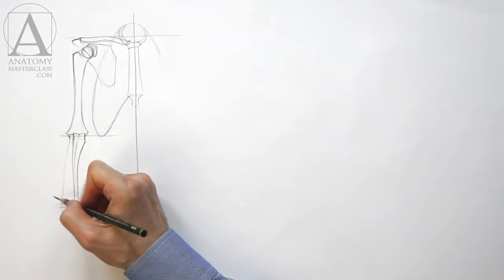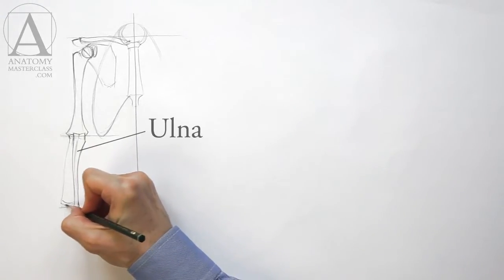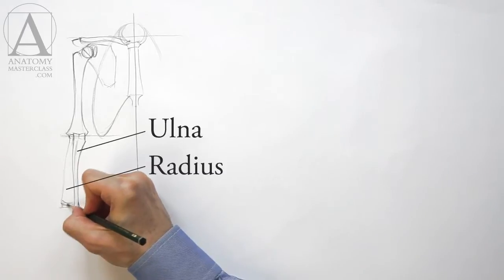As I mentioned, there are two bones in the lower arm. One is called the ulna, and the other is the radius.